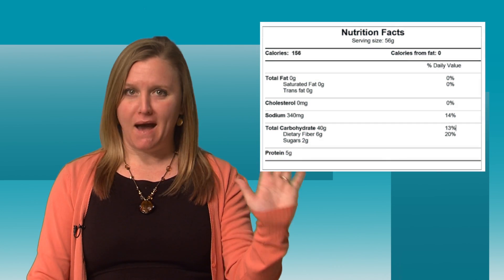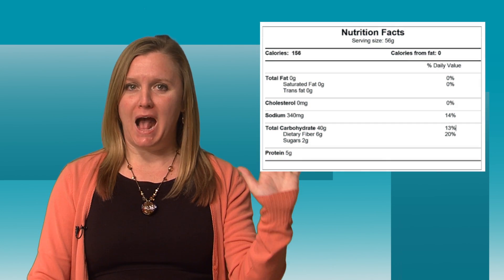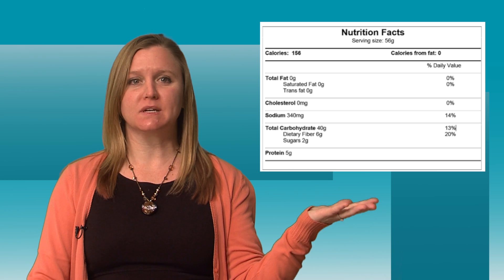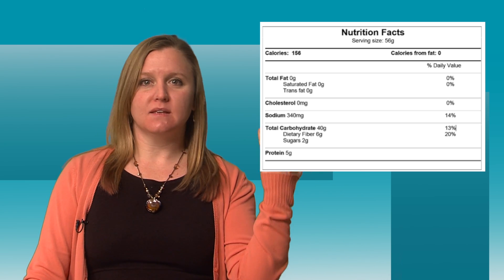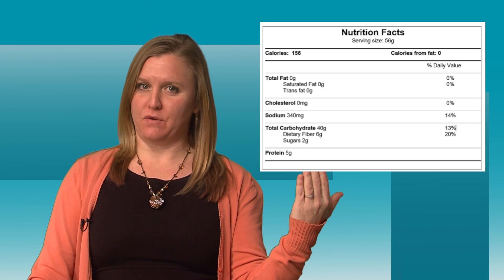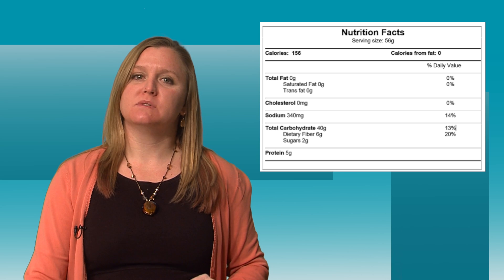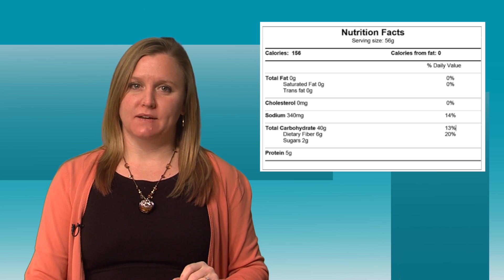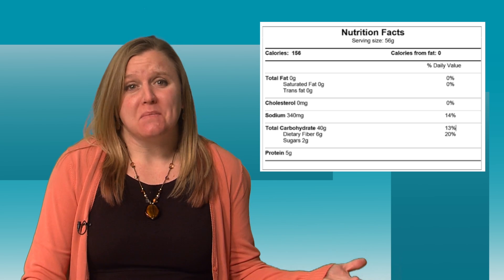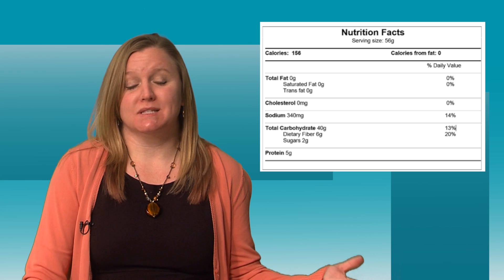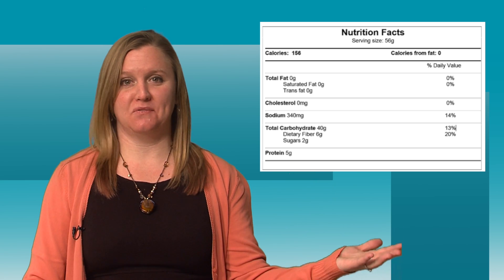A third way to tell if a food contains carbohydrate is to look at the food label. You can see right on the packaging how much carbohydrate is in a food. For example, of 56 grams in this bag of red beans and rice, 40 grams of it is carbohydrate. And lastly, you can memorize what food groups are high in carbohydrates and apply that information.